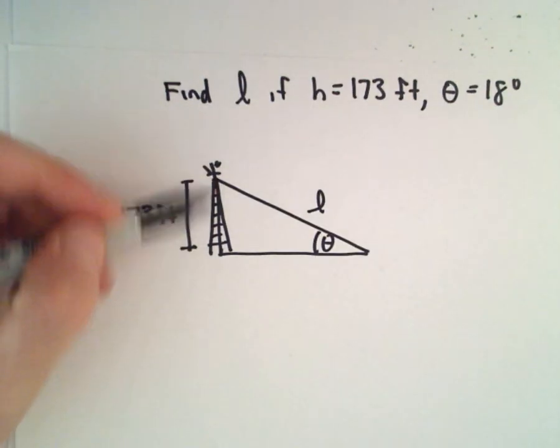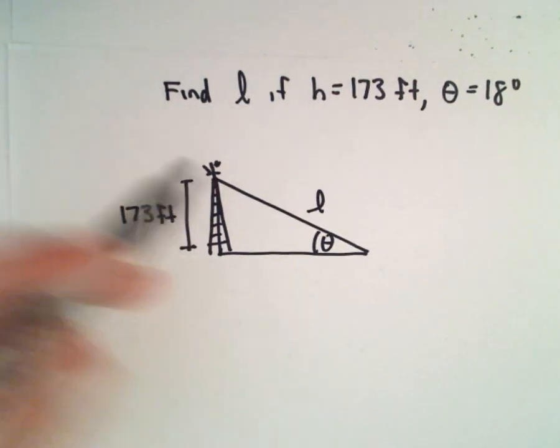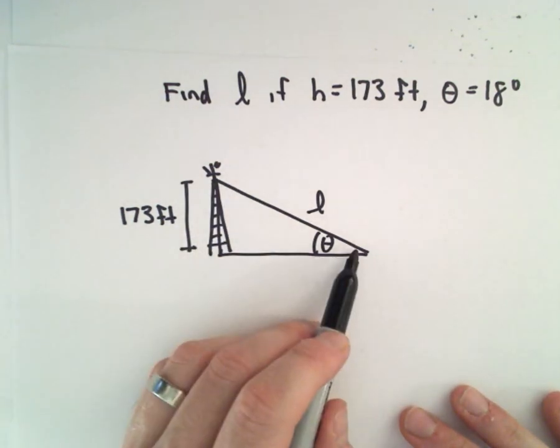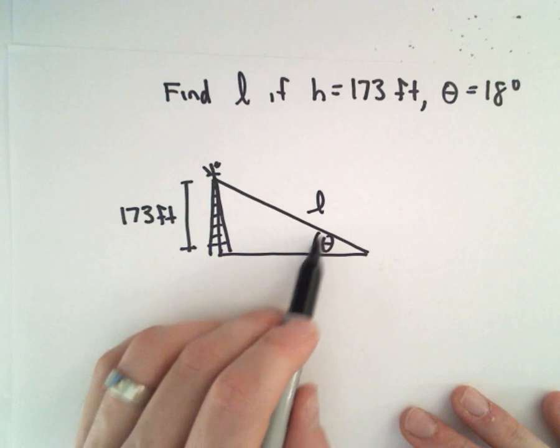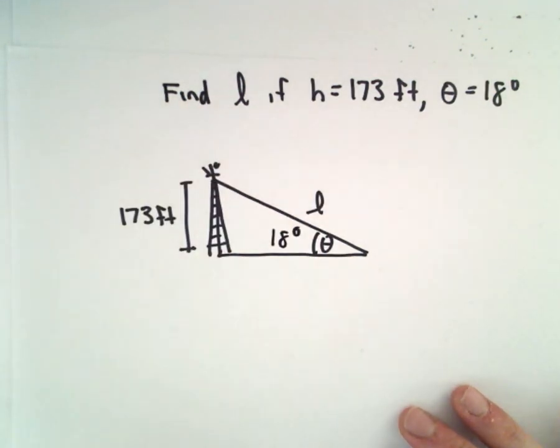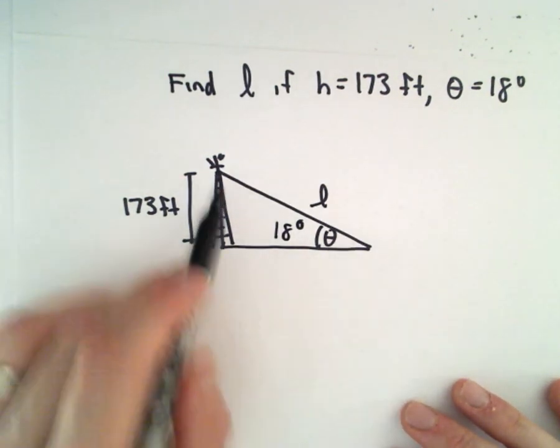Okay, here we have a cell phone tower that's 173 feet tall. It's attached to a guy wire with a length L to keep it securely in place. The angle of elevation between the ground to the guy wire is given as 18 degrees. We just want to find that length L.